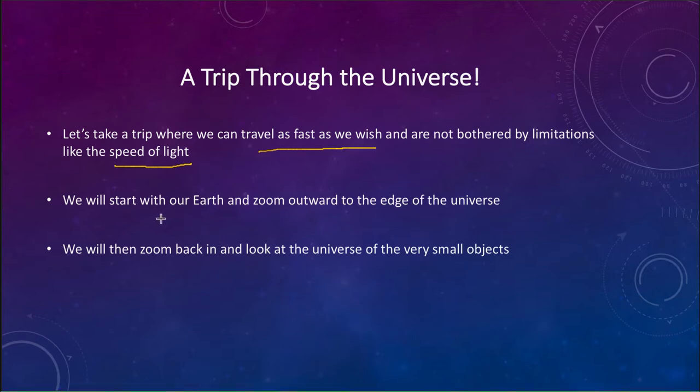When we start off we'll start out on our own earth with some things that we're actually familiar with. We'll zoom outward to the edge of the universe and then we can come back in and look at the universe of very small objects things like atoms. Very small objects that we'll also look at in terms of talking about how energy is generated in stars for example through atomic reactions that we'll need to look at.